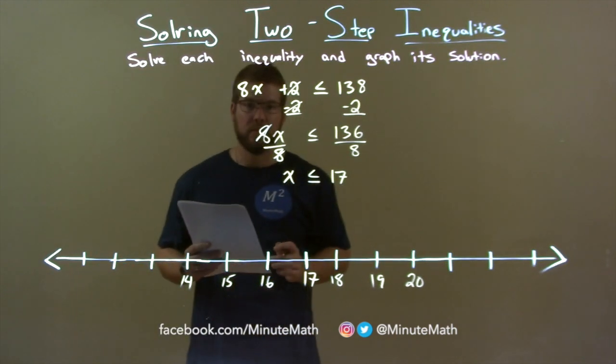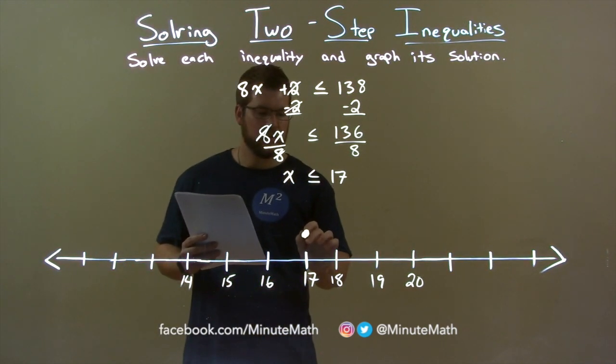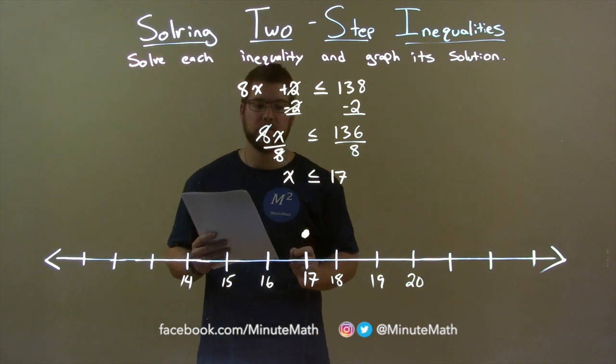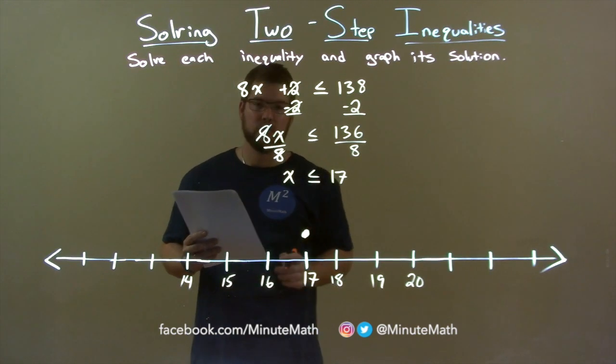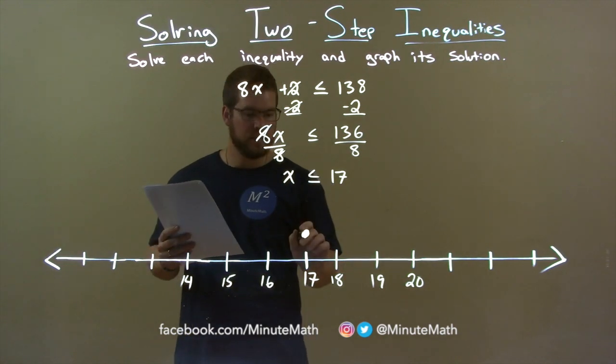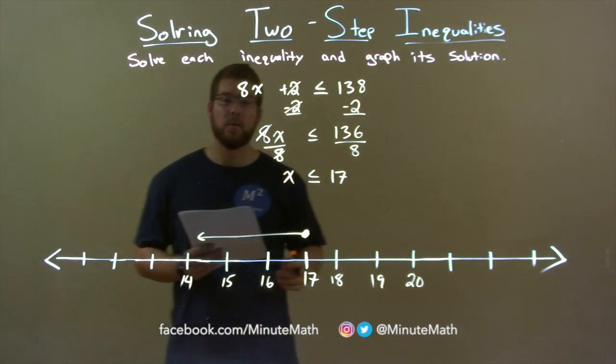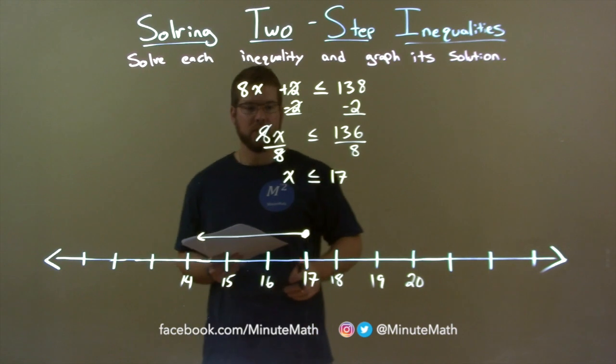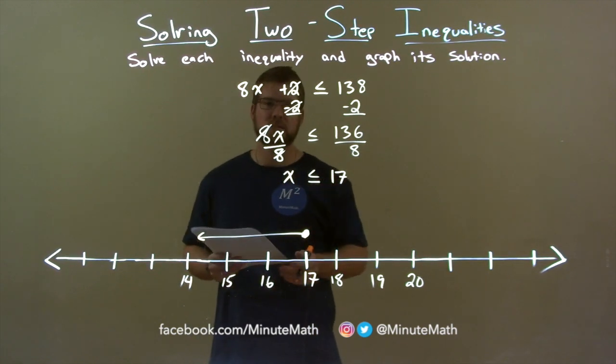Well, x can equal 17, so that's a closed circle right here at 17. Remember, equal to means closed circle. Less than sign means the arrow goes to the left, so the arrow goes here to the left. And there we have it. Our graph matches our final answer: x is less than or equal to 17.